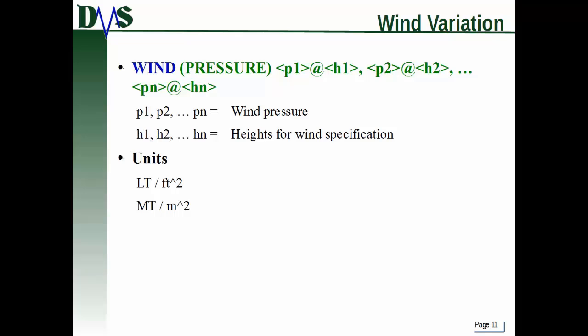Maybe you don't want that curve — maybe you want a different curve. You can also type in the wind pressures yourself directly as a set of pairs. You type wind pressure in parentheses, and then it's pairs of wind pressure at height, wind pressure at height, and so on. Your units are in units of pressure: long ton per feet squared or metric ton per meter squared.